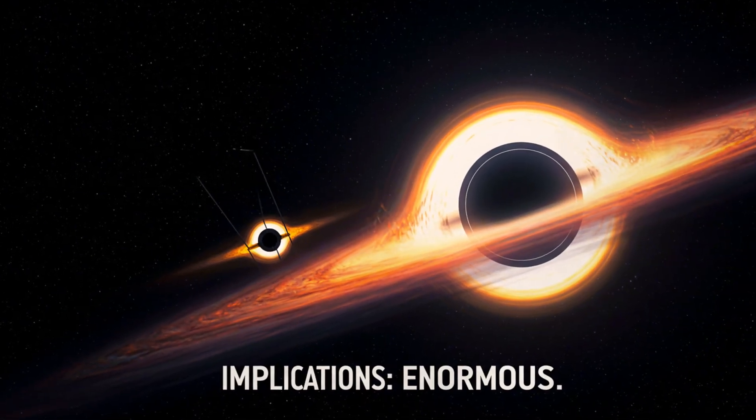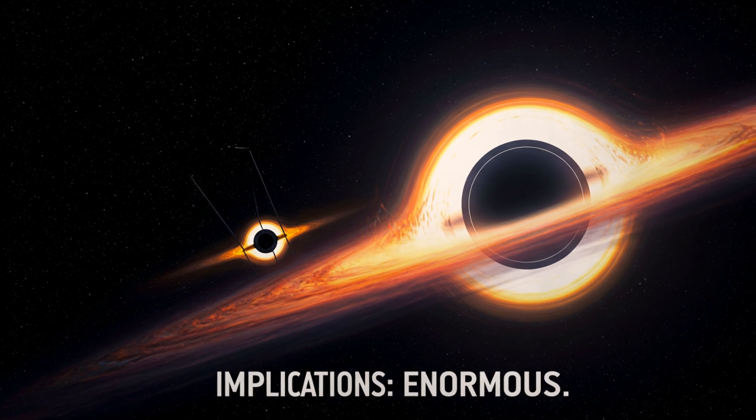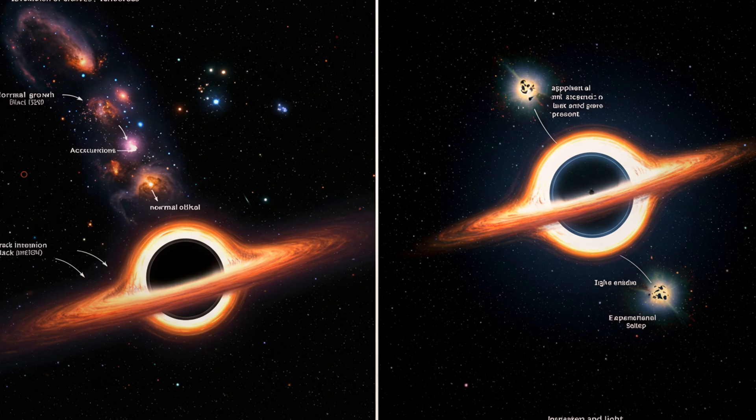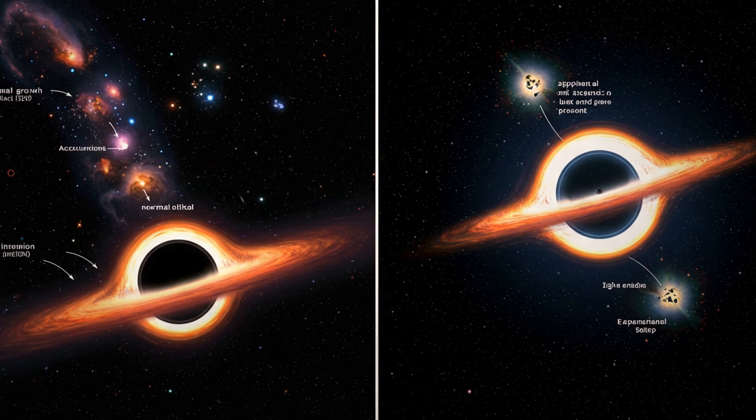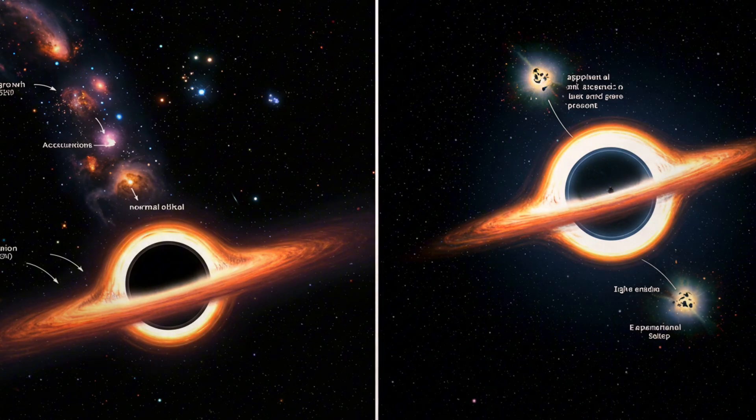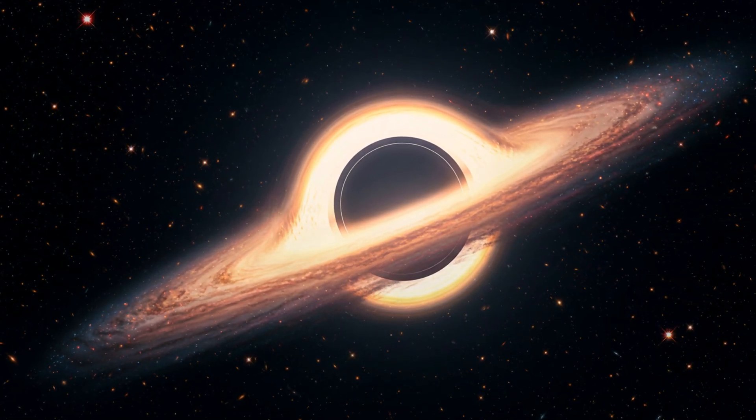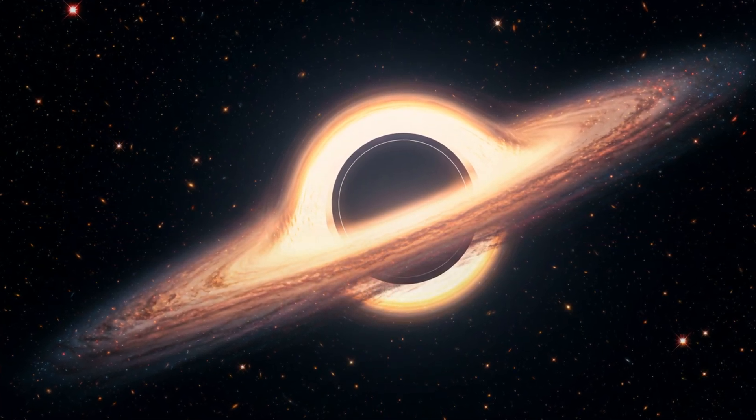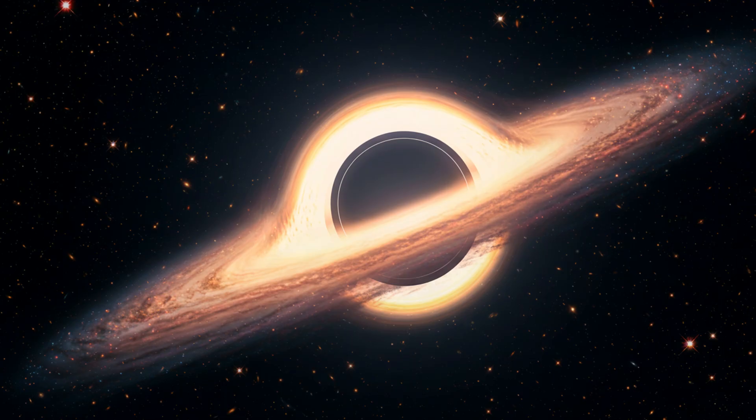If James Webb has truly spotted primordial black holes, the implications are enormous. First, it could finally explain one of astronomy's biggest mysteries, how supermassive black holes formed so quickly in the early universe. Instead of starting small and growing over billions of years, they may have begun as primordial giants, already massive from birth.